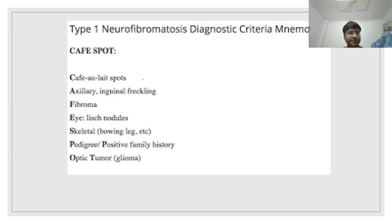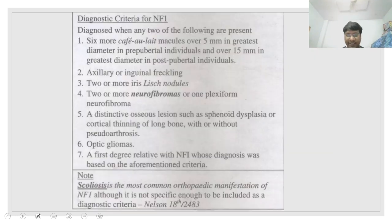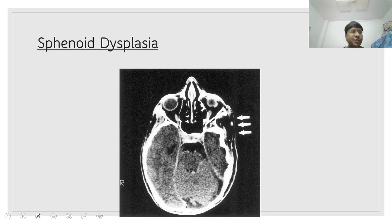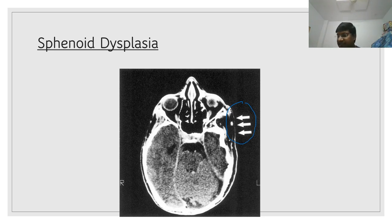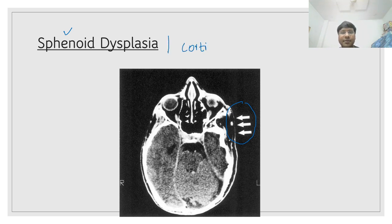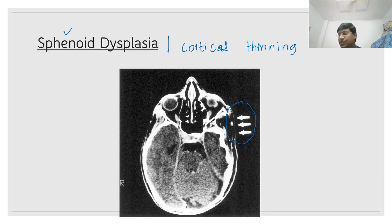For the word S — skeletal manifestations — you can see the sphenoid bone. The skeletal manifestation is sphenoid dysplasia, or there will be cortical thinning of the bone with or without pseudoarthrosis. That is your skeletal manifestation.